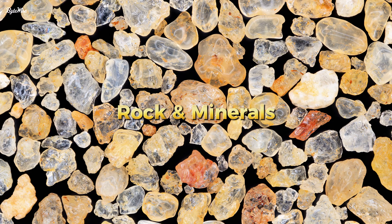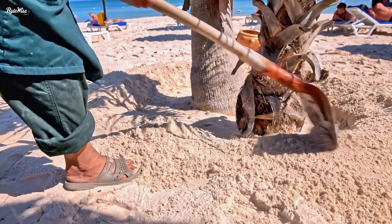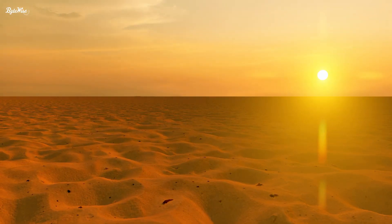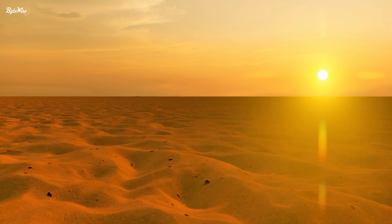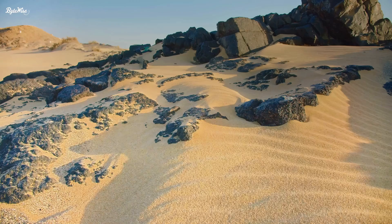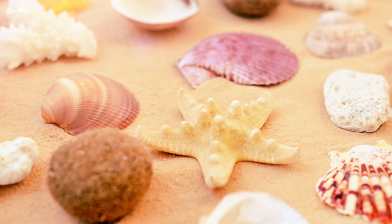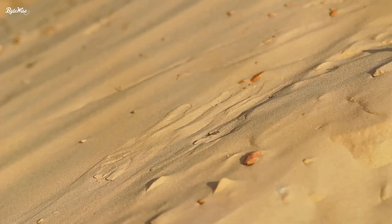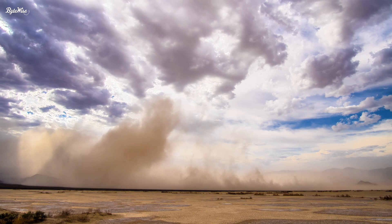At its essence, sand is comprised of minuscule pieces of rocks and minerals, each with its own tale. Yet not all sand shares the same story or substance. The soft, fine grains that caress your feet along the shoreline differ vastly from the coarser, more uniform grains found in the heart of the desert. This distinction stems from their formation processes. Beach sand predominantly consists of quartz and shell fragments, finely ground by the ocean's relentless churn, while desert sand boasts a composition rich in feldspar, shaped by the wind's sculpting hand.